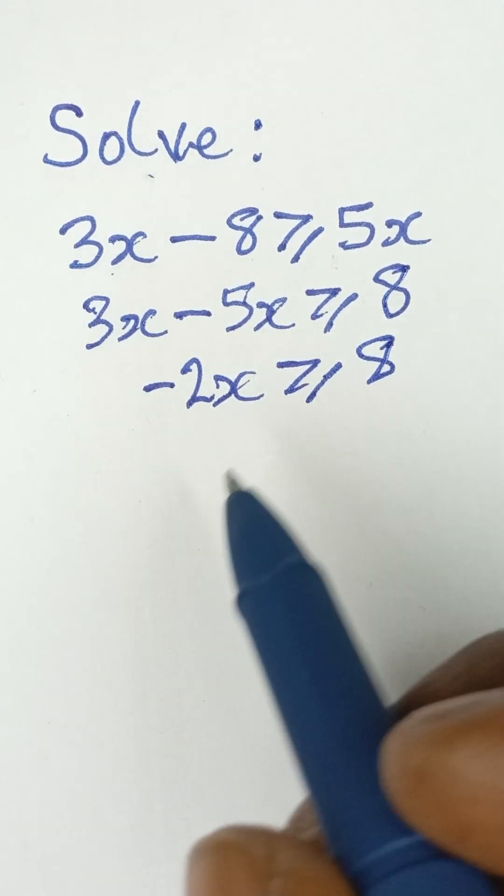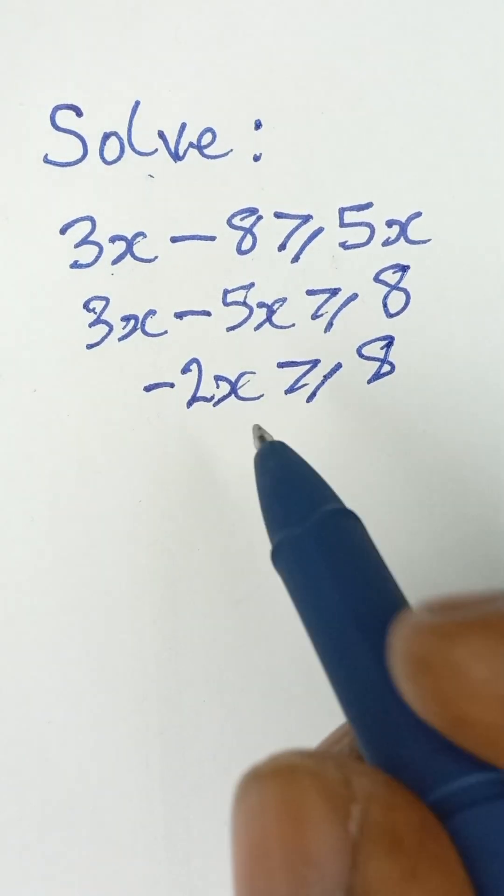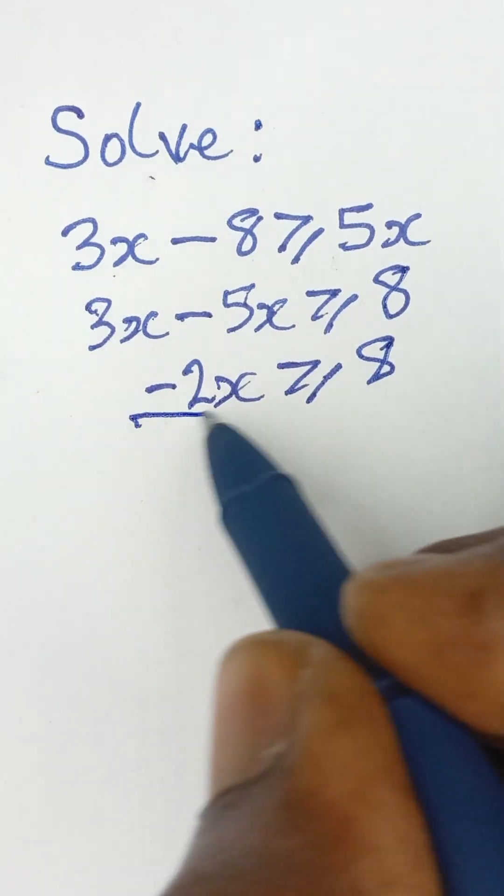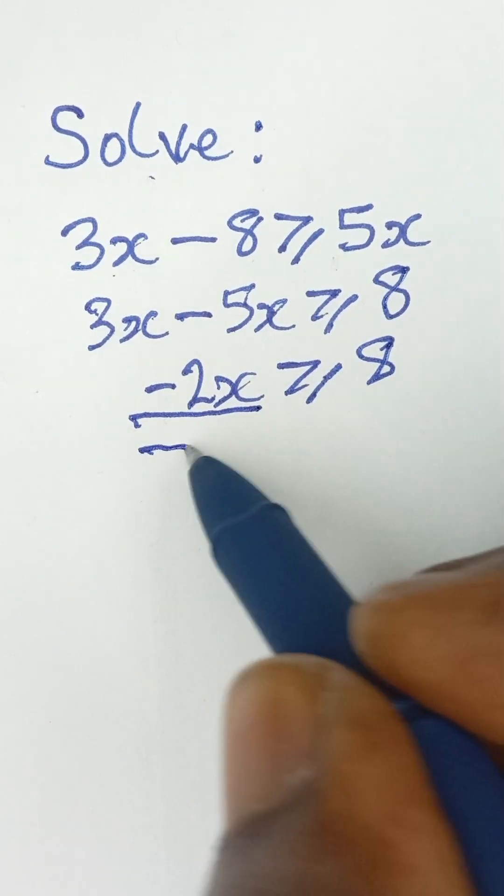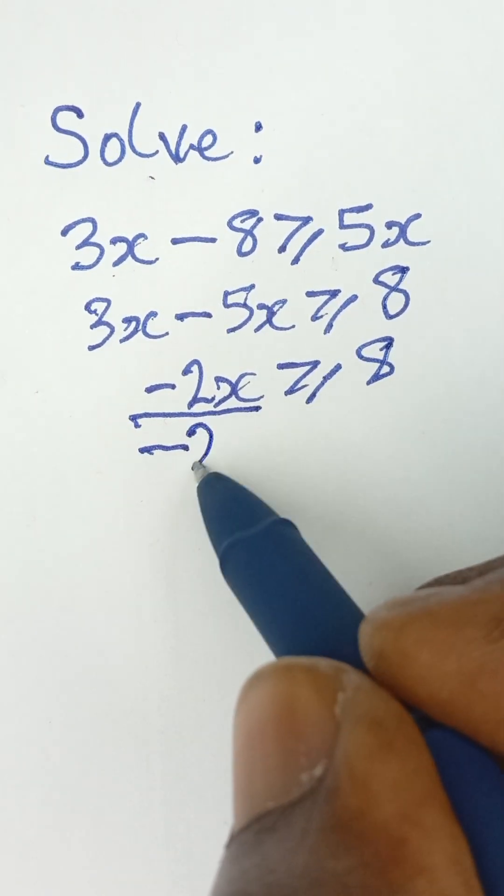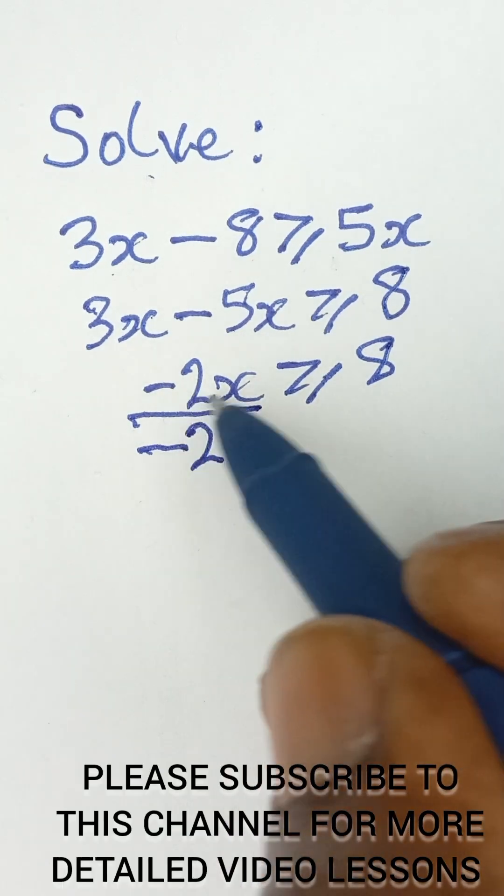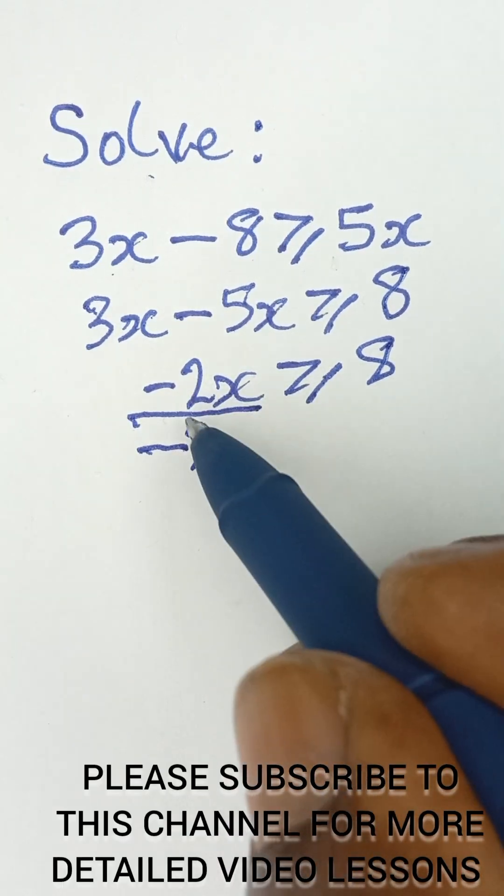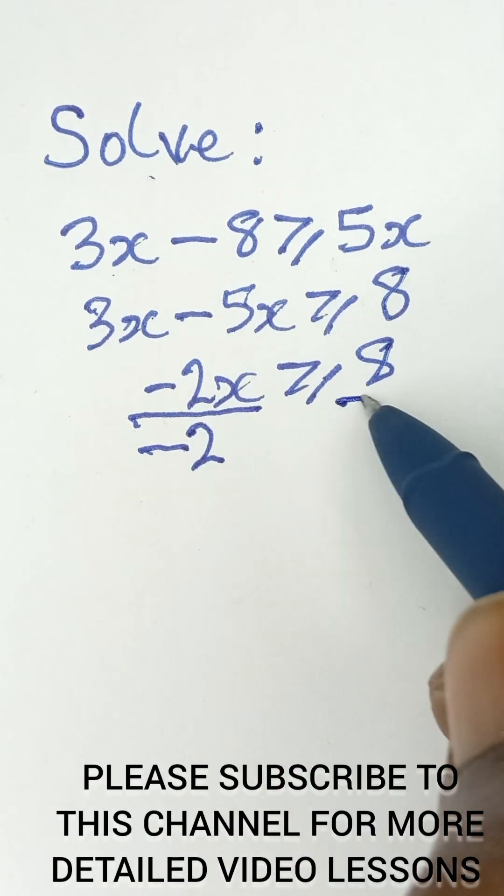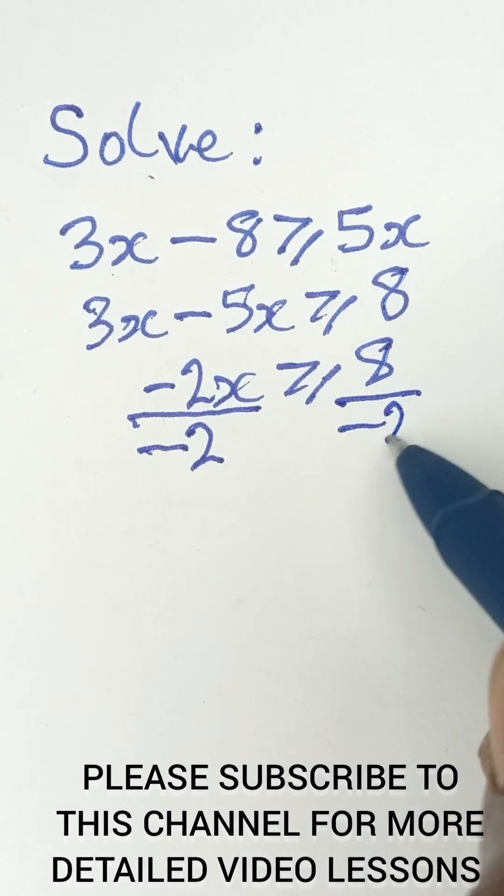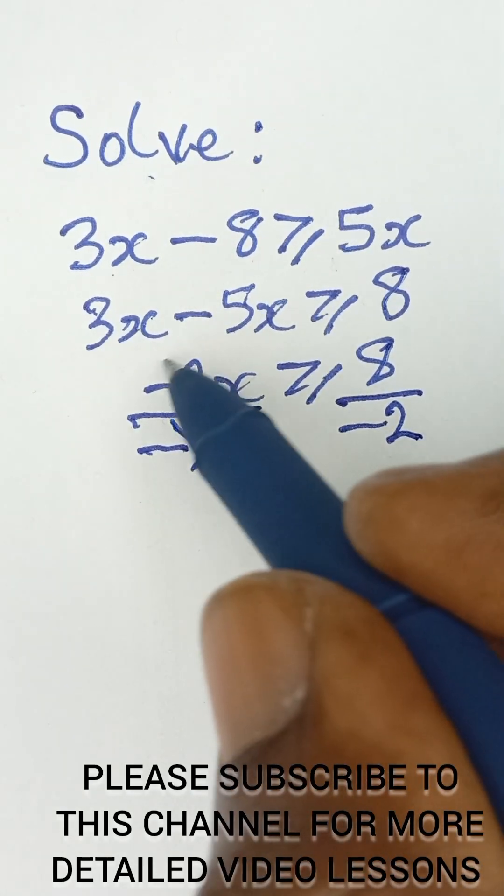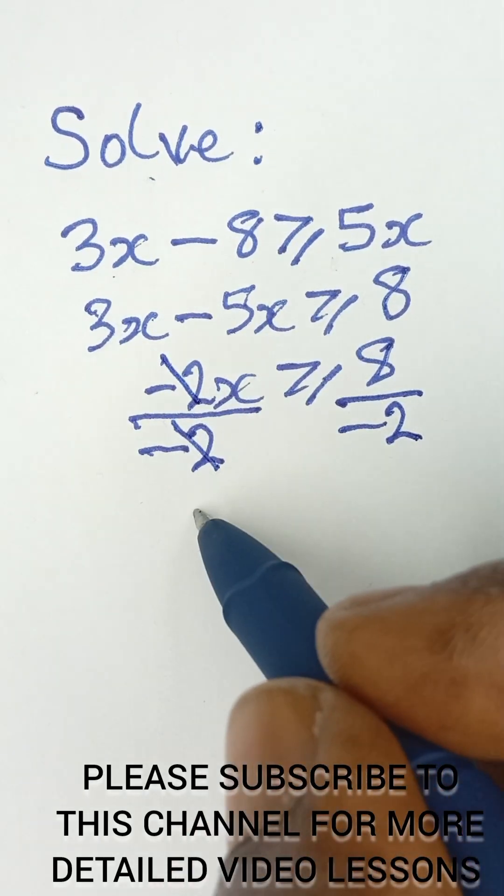Now, the next thing to do, this is the important part that you have to be careful about. Once you divide both sides of an inequality by a negative number, because it's negative 2x, we are dividing both sides by negative 2. When you divide both sides by negative 2, this negative 2 cancels this negative 2, and then you are left with x.